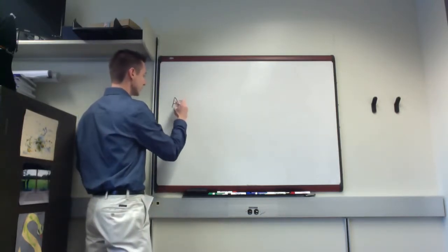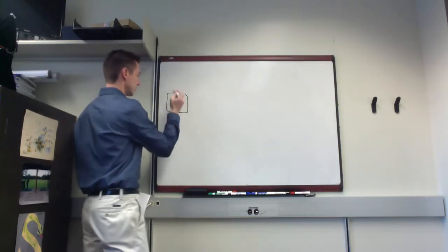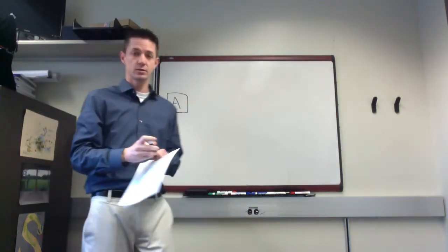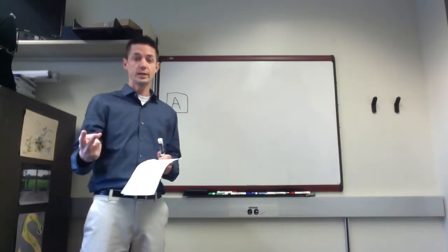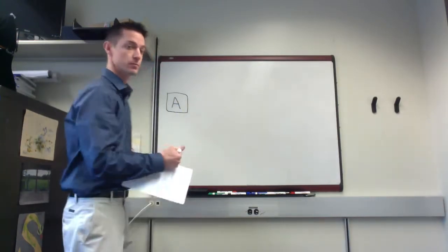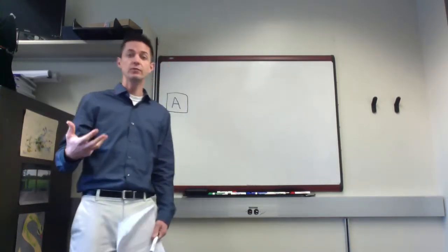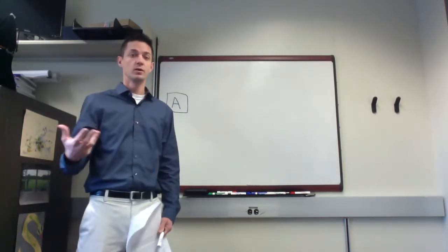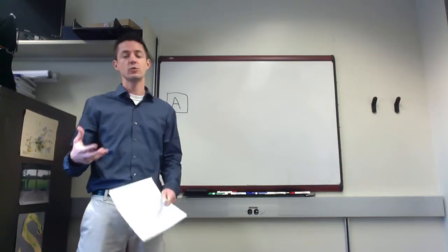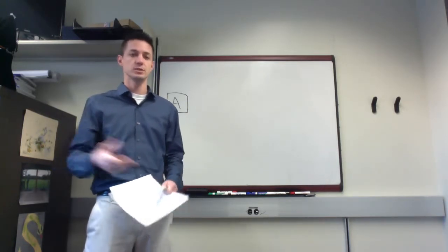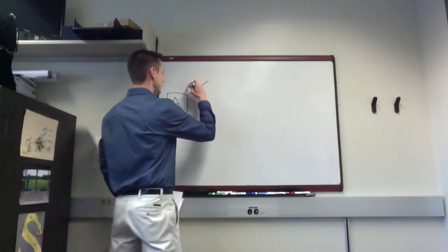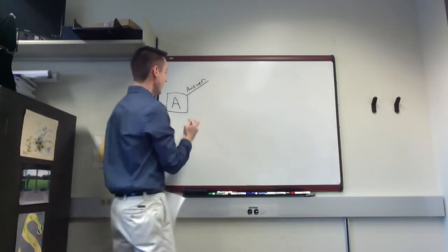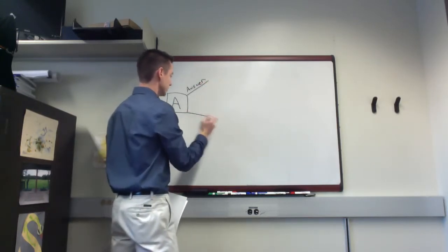At node A, when the host asks us the question, we have two options: we can answer, or we can dare the other team to answer. So we have two branches leaving this decision node — one for each possible decision alternative: the answer branch and the dare branch.